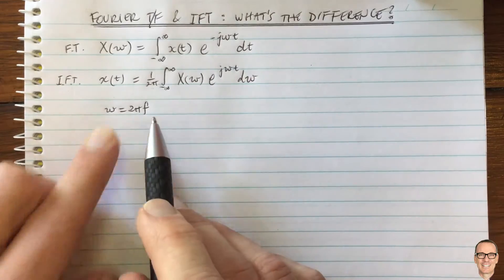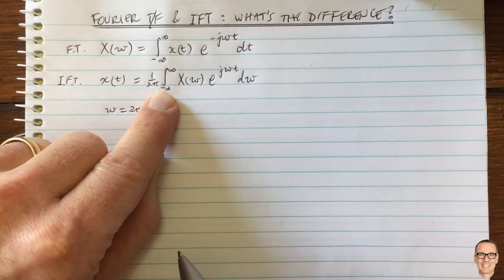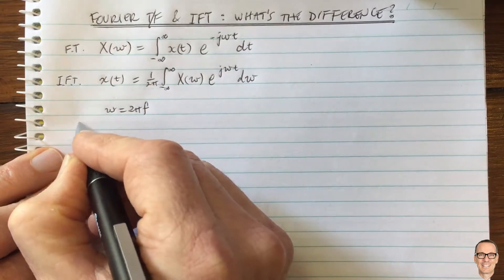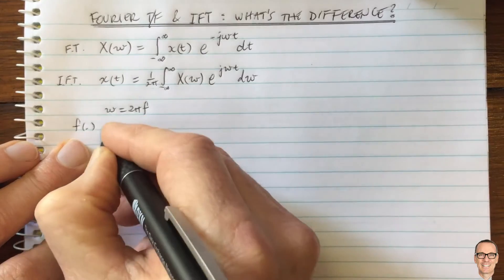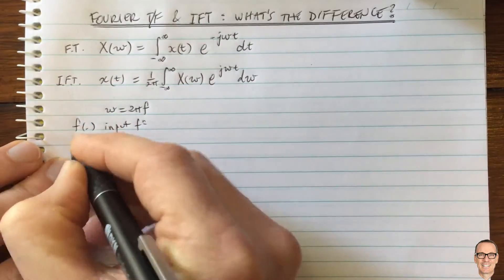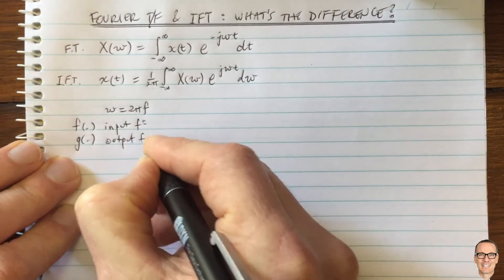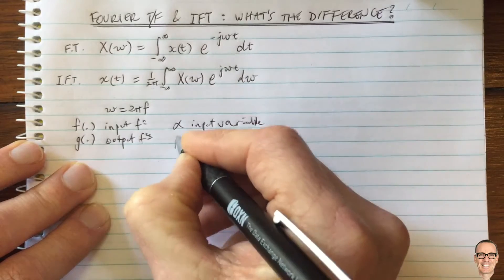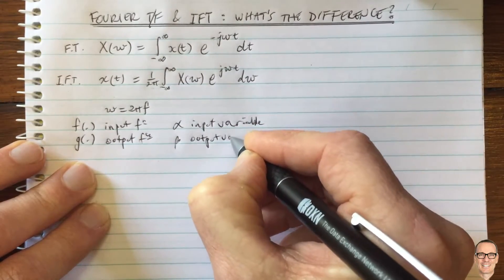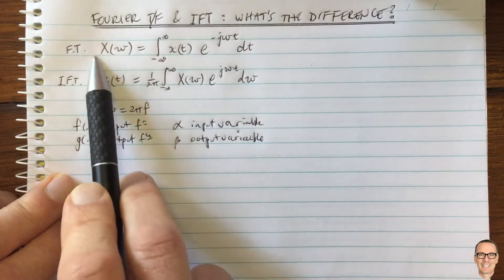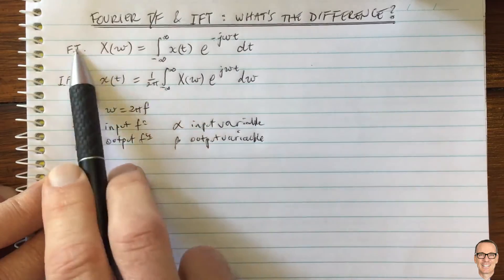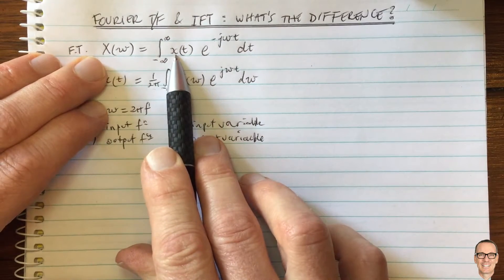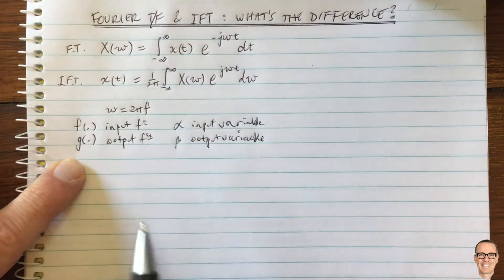What about this negative sign? First, I want to make the comparison between the two functions and show just how similar they are. I'm going to let f be the input function, g be the output function, alpha be the input variable, and beta be the output variable. I'll show what I mean by this right now. I'm going to rewrite the Fourier transform using these functions, replacing the original time and frequency domain notation with these more general ones.